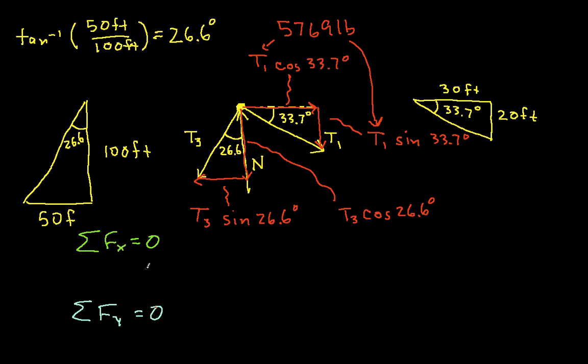So if I sum the forces in the x direction then, I will have this guy. And since it's going to the left, it will be negative t3 sine 26.6 degrees. And then I'll have this guy, which is t1 cosine 33.7 degrees, and this is equal to zero.